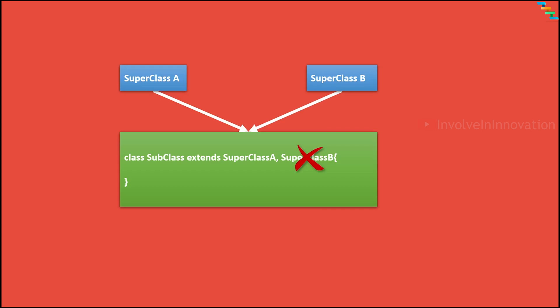There is no need to worry about the diamond problem until Java 7, but with default methods in interfaces introduced in Java 8, we need to really worry about the diamond problem. We will see this with an example.